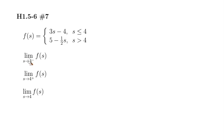Let's look at the left-hand limit. S is approaching 4 from the left-hand side, so you can think of S as a smaller number than 4. If S is smaller than 4, we know we're going to have to use the top formula, so we're going to replace F of S by the top formula, which is 3S minus 4.